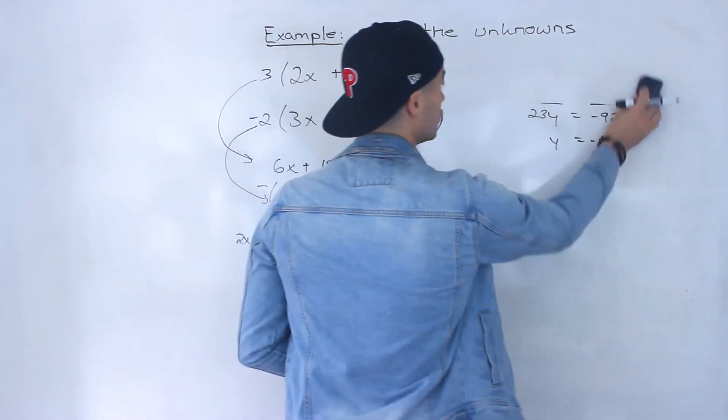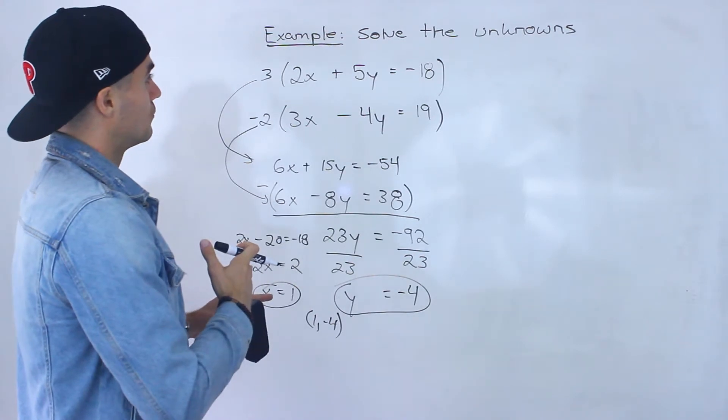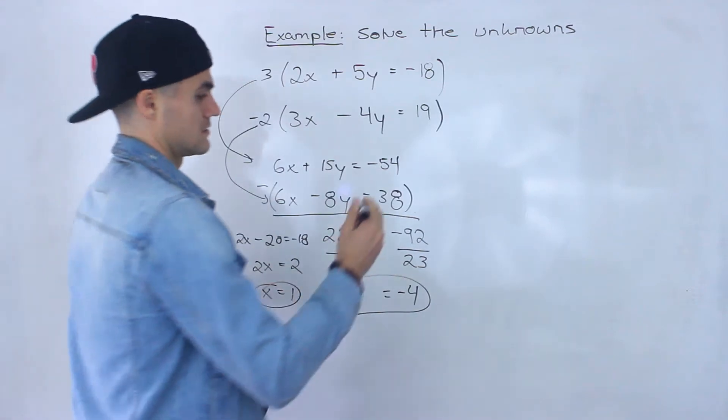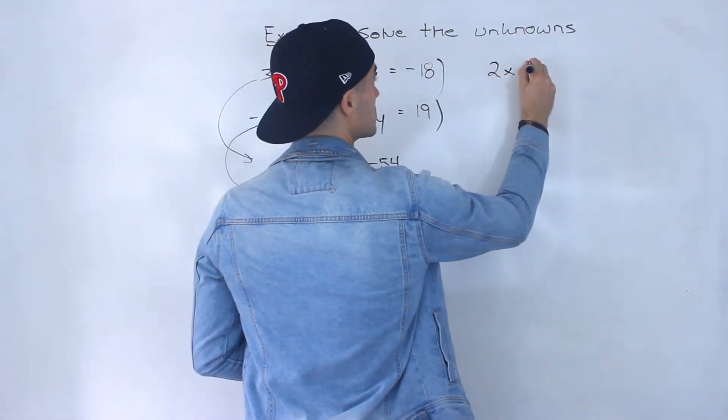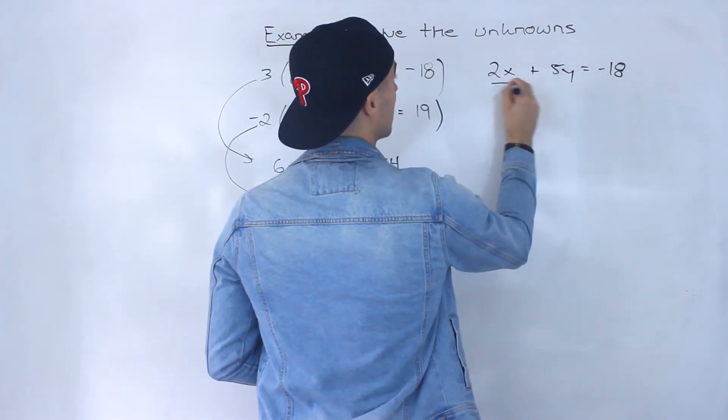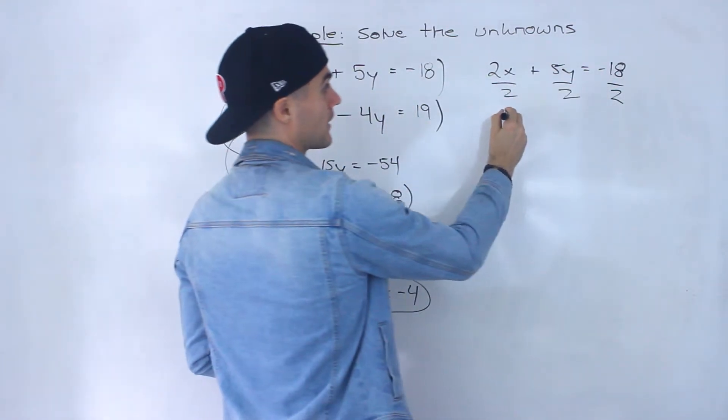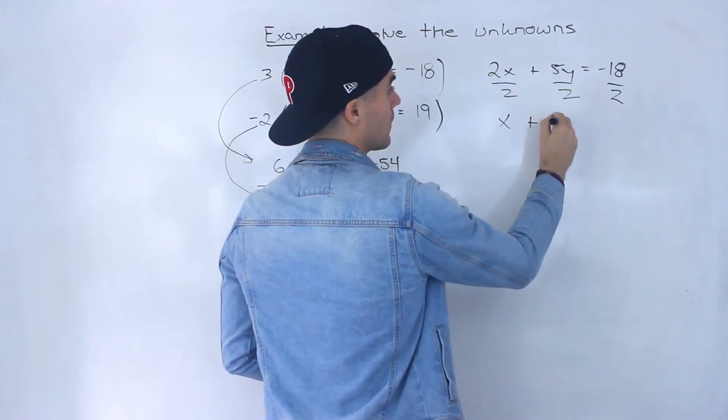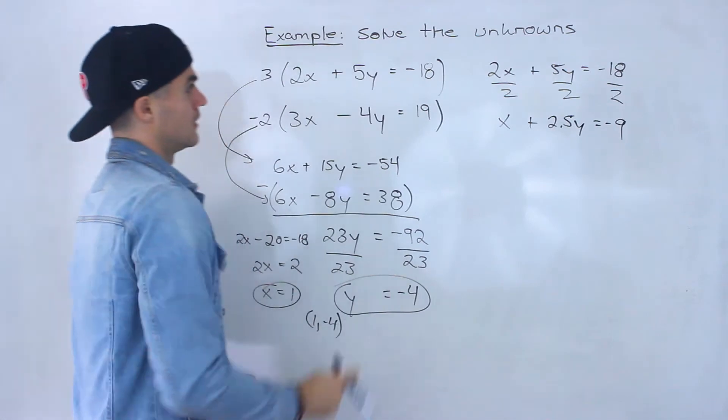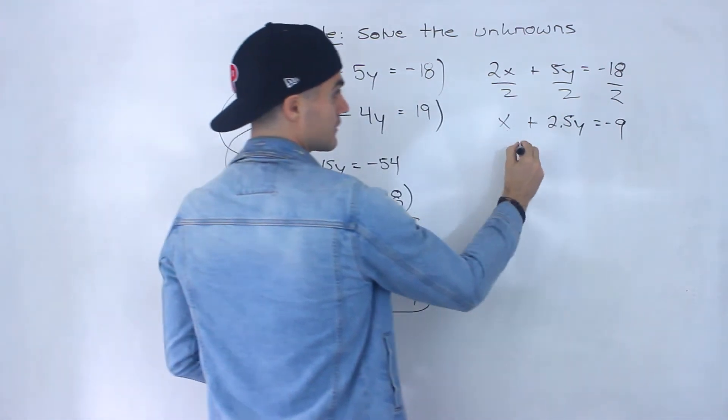Now if we were to do substitution again there's no variable that's isolated here but what I can do is maybe take this so let me rewrite this equation. I got 2x plus 5y equals negative 18. I can maybe divide everything by 2. Right get that x by itself so I'd have x plus 5 over 2y or 2 and a half y equals negative 9. So I took this equation converted it to this now I could isolate for this x.